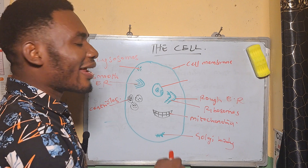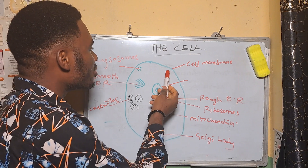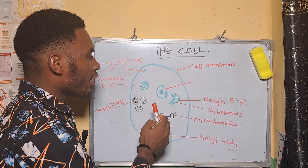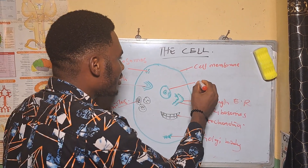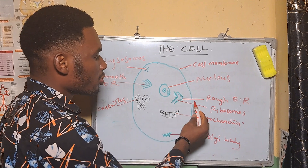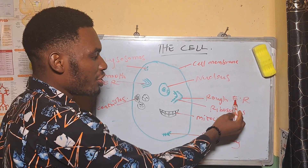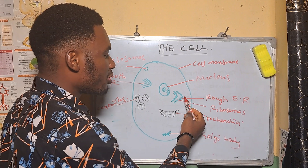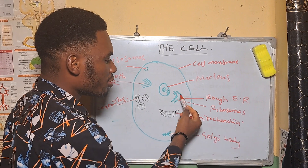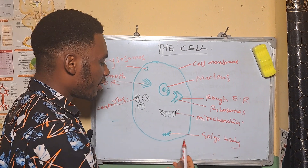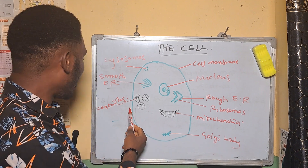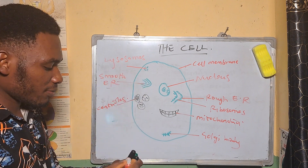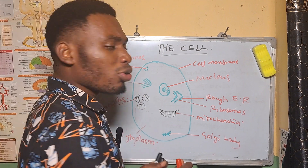An animal cell is bounded by a thin layer of membrane called the cell membrane. Other organelles you can find here are the nucleus, the rough endoplasmic reticulum — ER stands for endoplasmic reticulum — the rough ER has ribosomes on it, you have the mitochondria, the Golgi body, the centrioles, the smooth endoplasmic reticulum, and the lysosomes.